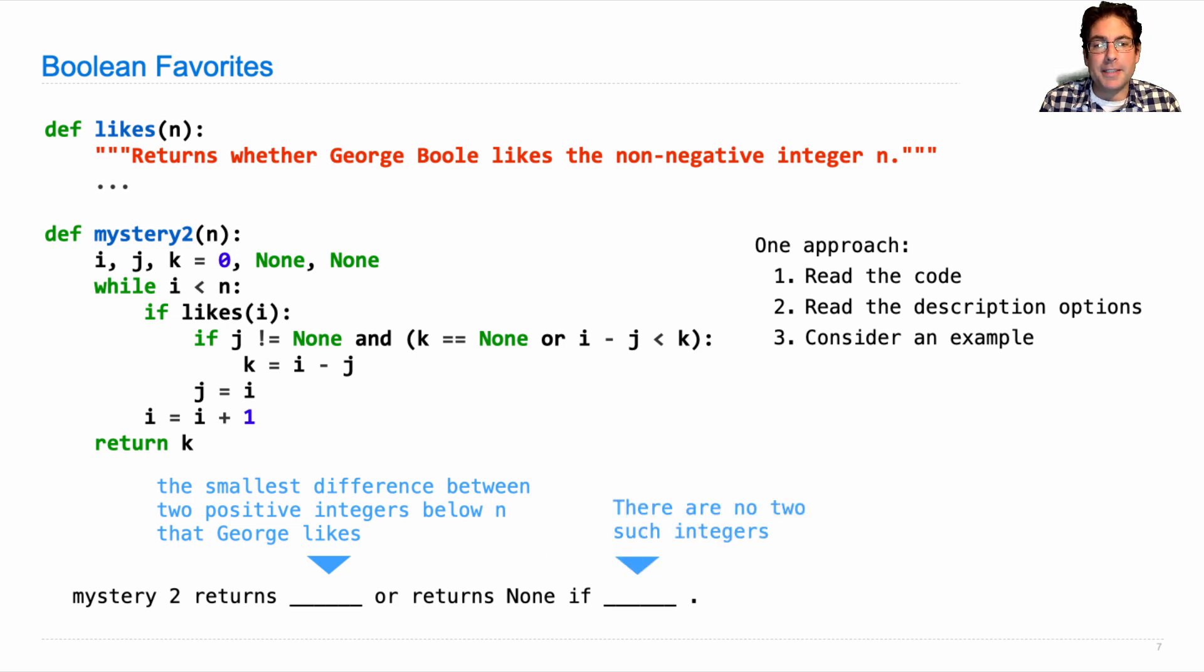So the way I would complete this is to say that there's no two such integers, or a longer description would be there are no two integers below n that George likes. Mathematicians use this word 'such' to refer to conditions that have already been stated, but it's okay to just write them out again too.